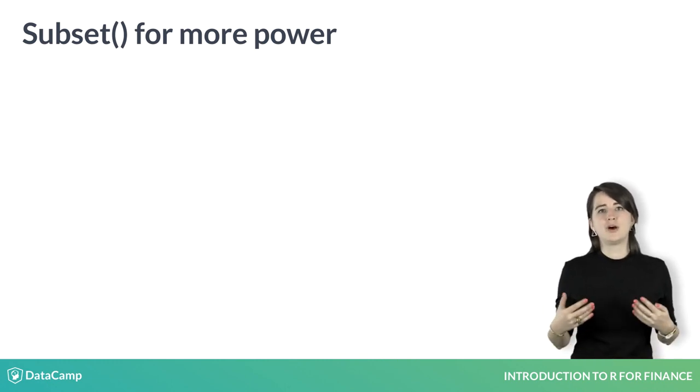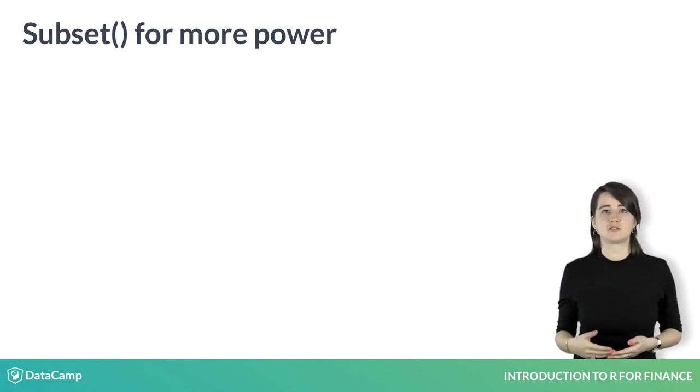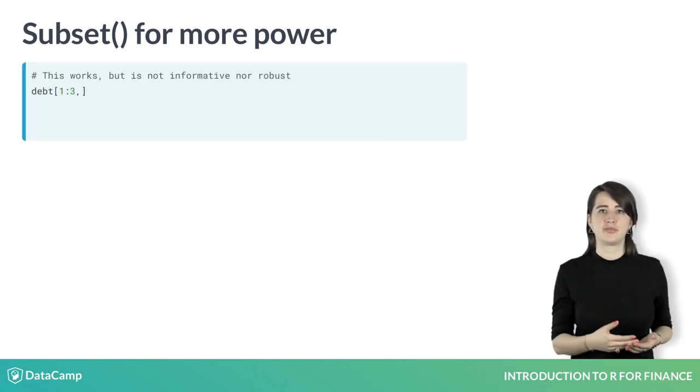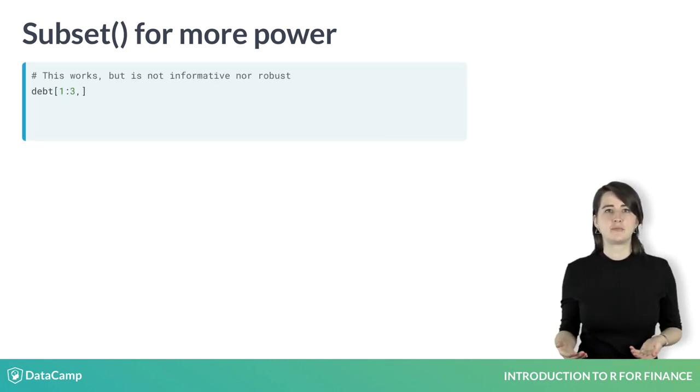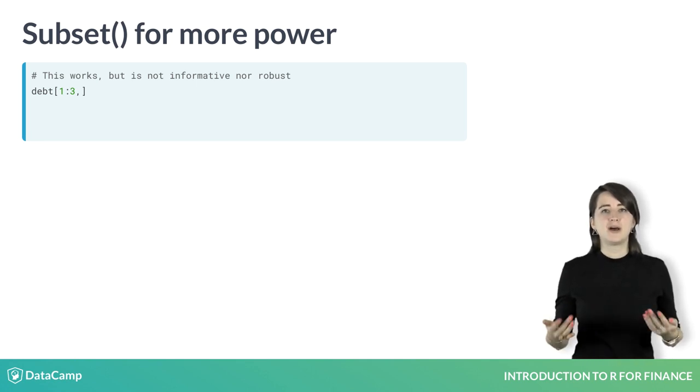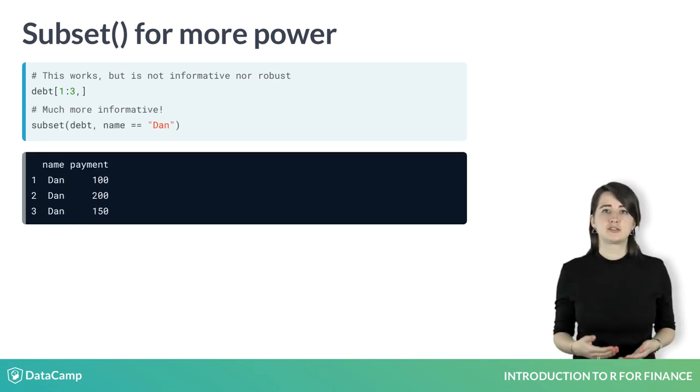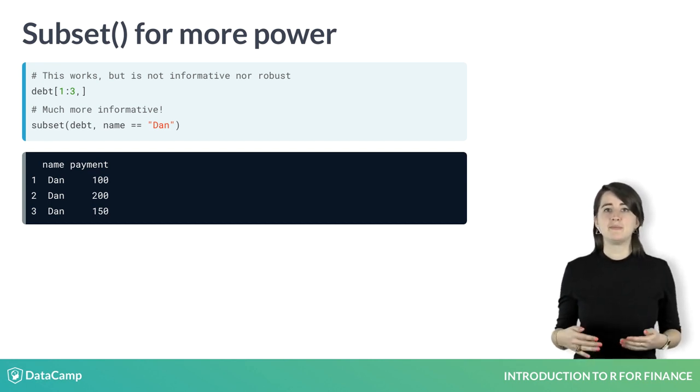For example, what if you wanted to look at just Dan's debt to total it up? You could use the brackets to select just rows 1 through 3, but this is not very robust against any changes to the data set. A better way to do this is to use subset to tell R that you just want the rows of debt where name equals Dan.